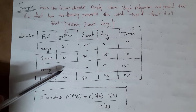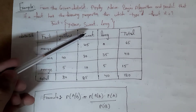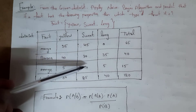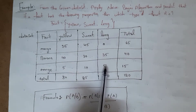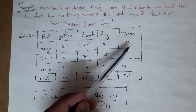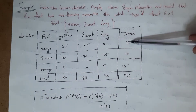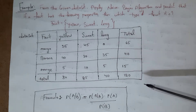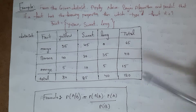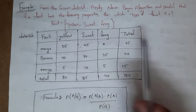Total fruits that are yellow: 35 + 40 + 5 = 80. Total fruits that are sweet: 45 + 30 + 10 = 85. Total fruits that are long: 0 + 35 + 5 = 40. Total of all fruits: 65 + 40 + 15 = 120. So out of 120 fruits, 80 are yellow, 85 are sweet, and 40 are long.